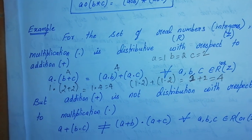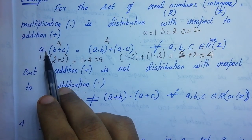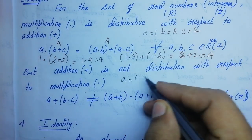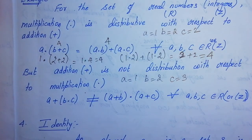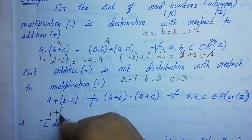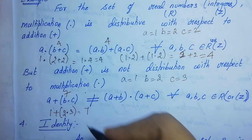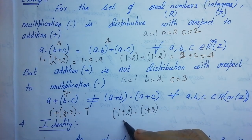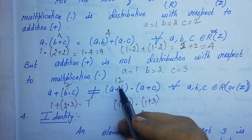You can check with any two numbers. Now let's show that addition is not distributive with respect to multiplication. Take a=1, b=2, c=3. Then A + (B dot C) = 1 + (2 dot 3) = 1 + 6 = 7. But (A + B) dot (A + C) = (1+2) dot (1+3) = 3 dot 4 = 12. LHS is 7 and RHS is 12, so they are not equal.